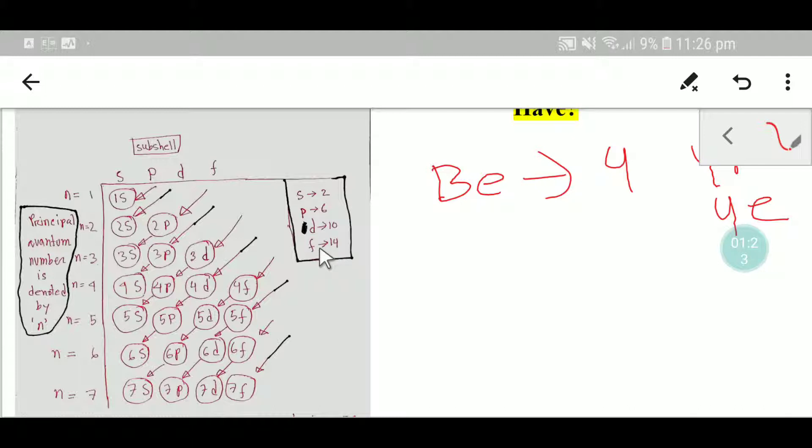We have just 4 electrons, so we have to distribute these 4 electrons among the subshells. The first subshell can take 2, then second 2s can take 2, so we are getting 2 plus 2, that is 4. We have distributed the 4 electrons.